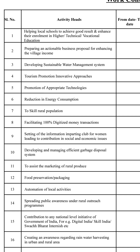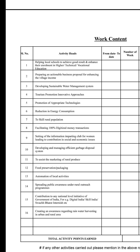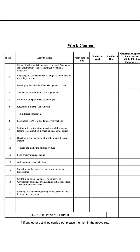If you are unable to do an activity, it will not be considered. You need to approach a particular NGO or government organization where they can affiliate it. Out of these 16 activities, you need to select any five and carry them out. If you are unable to do so, the degree certificate will not be provided.